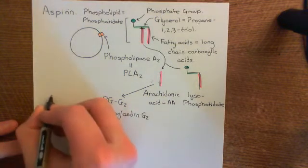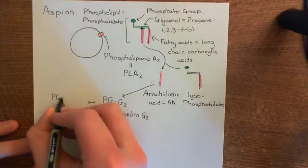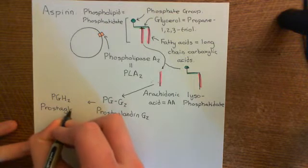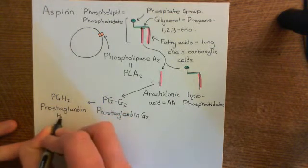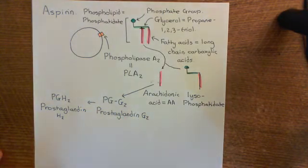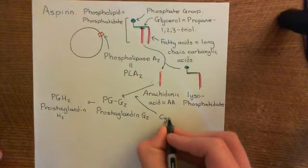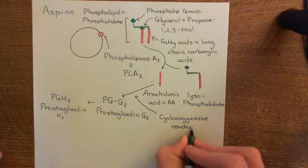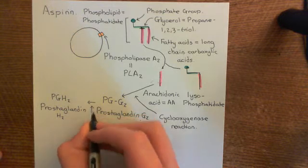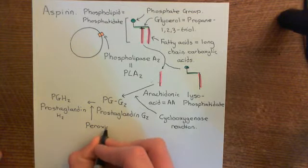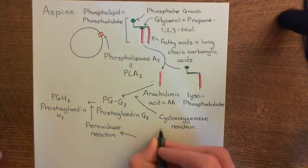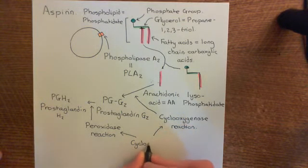Cyclooxygenase also converts prostaglandin G2 into prostaglandin H2, abbreviated PGH2. The first reaction — converting arachidonic acid into prostaglandin G2 — is known as the cyclooxygenase reaction, whilst the second reaction converting PGG2 into PGH2 is known as the peroxidase reaction. Both the cyclooxygenase and peroxidase reactions are catalyzed by the enzyme cyclooxygenase.